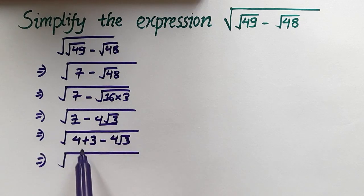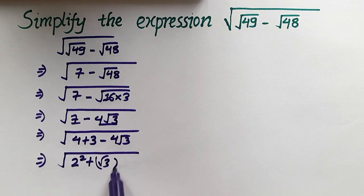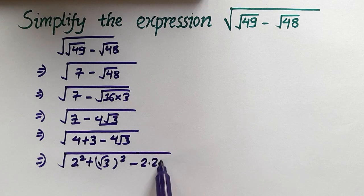And 4 equals 2², so let's write √(2² + (√3)² - 2×2√3).